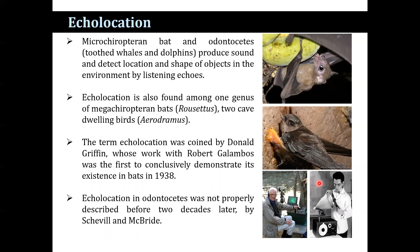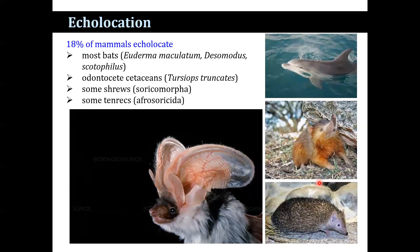Echolocation in odontocetes was not properly described until two decades later. About 18% of the mammals perform echolocation. Among mammals, most bats — including Euderma, Desmodus, and Scotophilus — perform echolocation. Odontocetes also perform echolocation, as do some shrews and some tenrecs. Overall, 18% of mammals perform echolocation.